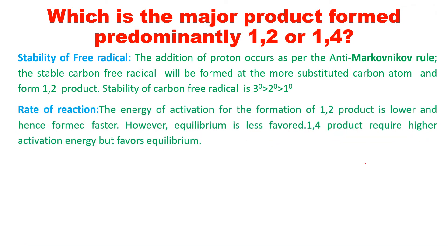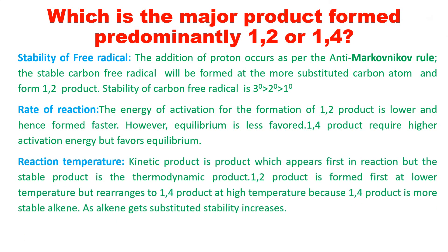Regarding rate of reaction: the energy of activation for the formation of the 1,2 product is lower, so it forms faster; however, equilibrium is less favored for it. For the 1,4 product, a higher energy of activation is required, but equilibrium is favored because it forms a more stable alkene. When energy of activation is high we get the 1,4 product; when lower, we get the 1,2 product. Reactions carried out at low temperatures give the kinetic 1,2 product; at high temperatures we get the thermodynamic 1,4 product.